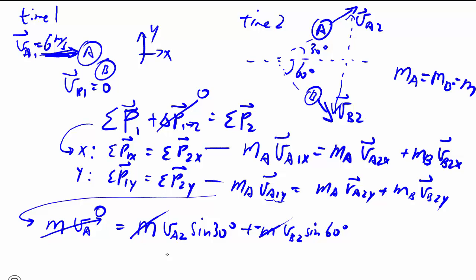The M cancels out because there's nothing there. We can work out that VA2 sine 30 degrees is equal to VB2 sine 60 degrees. So here we can already solve for one in terms of the other. So VA2 is equal to sine 60 over sine 30 of VB2.